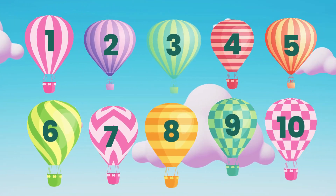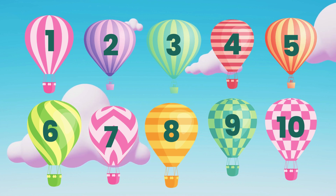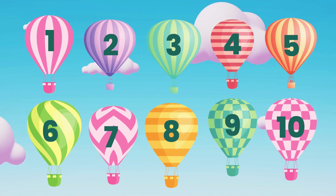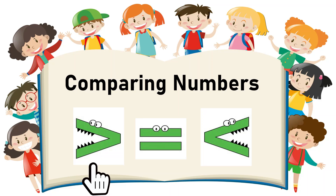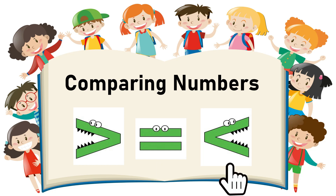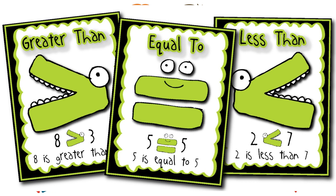There are three symbols we use to compare numbers: greater than, equal to, and less than. Imagine the symbols as little monsters — the greater than and less than symbols always want to eat the bigger number, so their mouth opens towards the larger number.